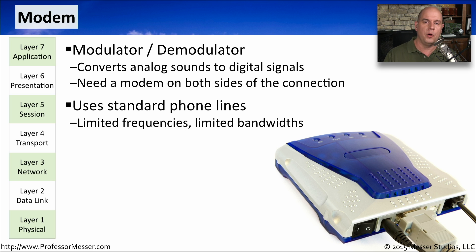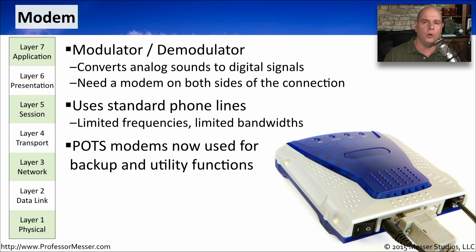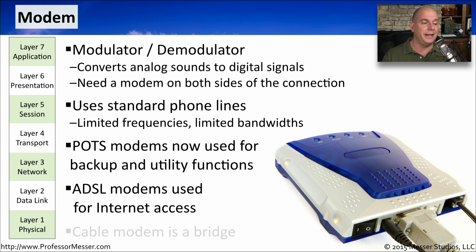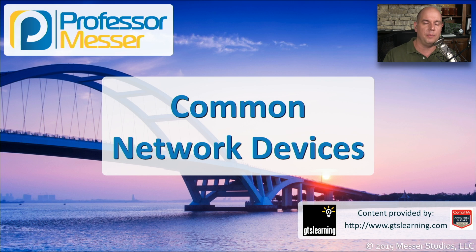On both sides of the connection, we have modems to convert signals back into digital form. It's very common to see modems being used on plain old telephone systems, or POTS lines, for things like backup and utility functions. The bandwidths allowed by these modems are very limited, so they're specifically used for utility functions or things that don't require a lot of bandwidth. A more modern modem might be one that connects us to a DSL network, where asynchronous DSL lines convert digital signals to analog and send them over the DSL link. You might also have a cable modem in your environment. Cable modems don't work exactly like a traditional modulator demodulator, but they do provide the bridging functionality that connects your Ethernet network to the cable modem network.